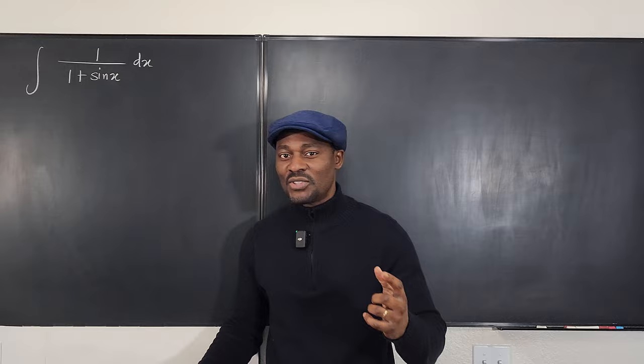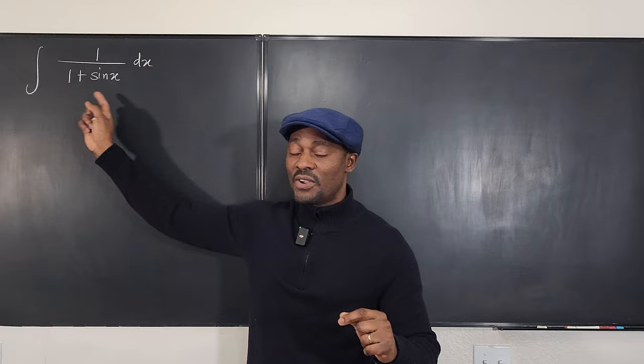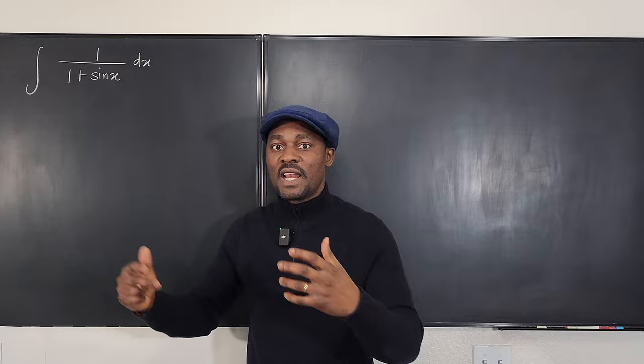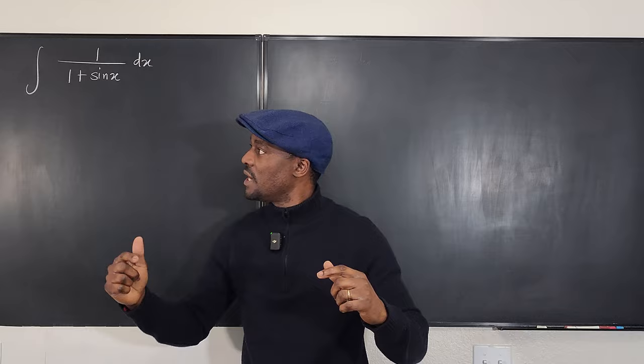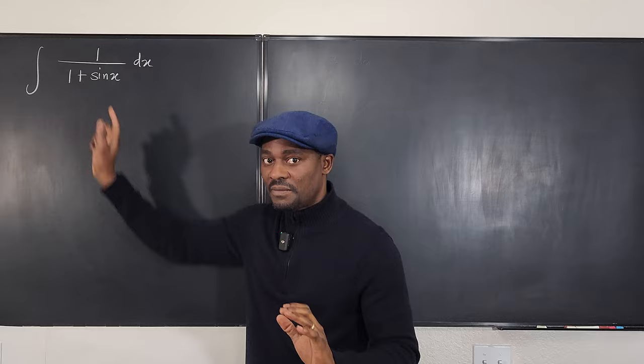Whenever you have a linear combination of a trig function like sine or cosine in the denominator — for example, 2 minus 3 sine x, or 2 plus 4 cosine x, or 1 minus sine x plus cosine x — as long as all of them are linear and not raised to a power, and on top you have a constant, this substitution always works.